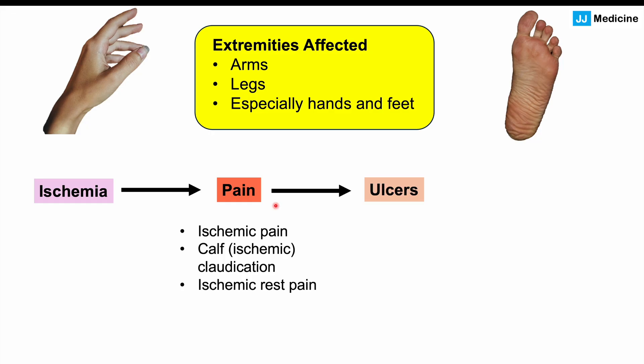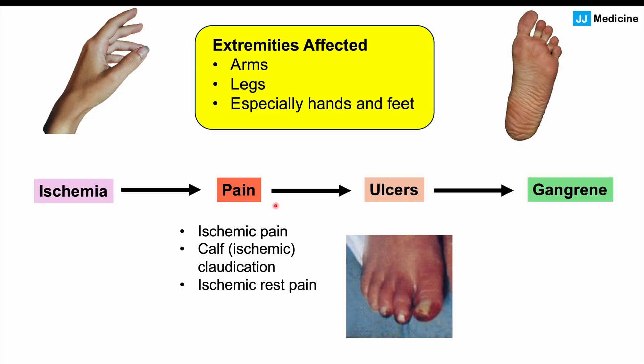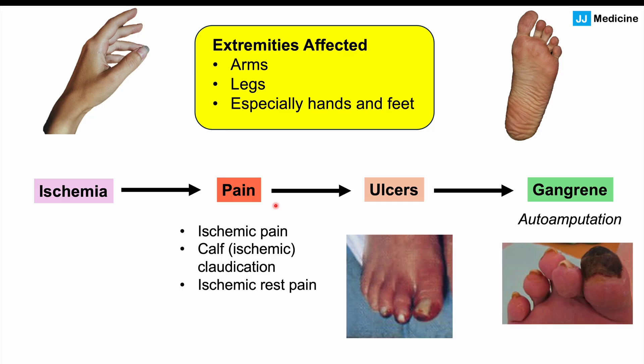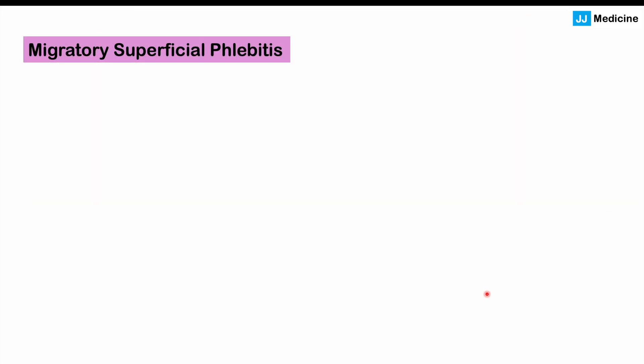Eventually, because of that lack of blood flow, we can start to get ulcers or ulcerations. And then finally, if the condition continues and hasn't been dealt with, gangrene can set in. We can ultimately get what we call auto-amputation — auto-amputation of digits like the toes and fingers, and even amputation of hands and feet in more severe cases.